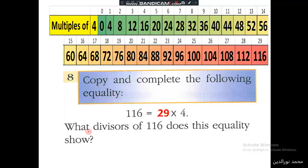The question asks: what divisors of 116 does this equality show? We see that these are the factors of 116, and at the same time, they are the divisors of 116. So the equality shows divisors 29 and 4.